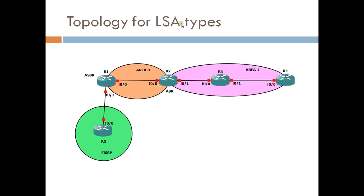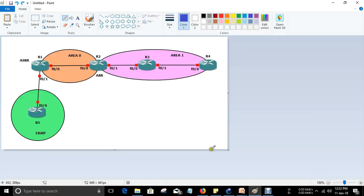Now let's look at a topology diagram for more detail on LSA types. For Type 1, the Router LSA, it will be generated by R3. R3 belongs to Area 1 only and does not connect to any other areas, so it generates a Type 1 LSA. For Type 2, there also needs to be a DR and BDR election between the routers. If there is a DR and BDR, they will generate a Type 2 LSA; otherwise, Type 2 LSA will not be generated.